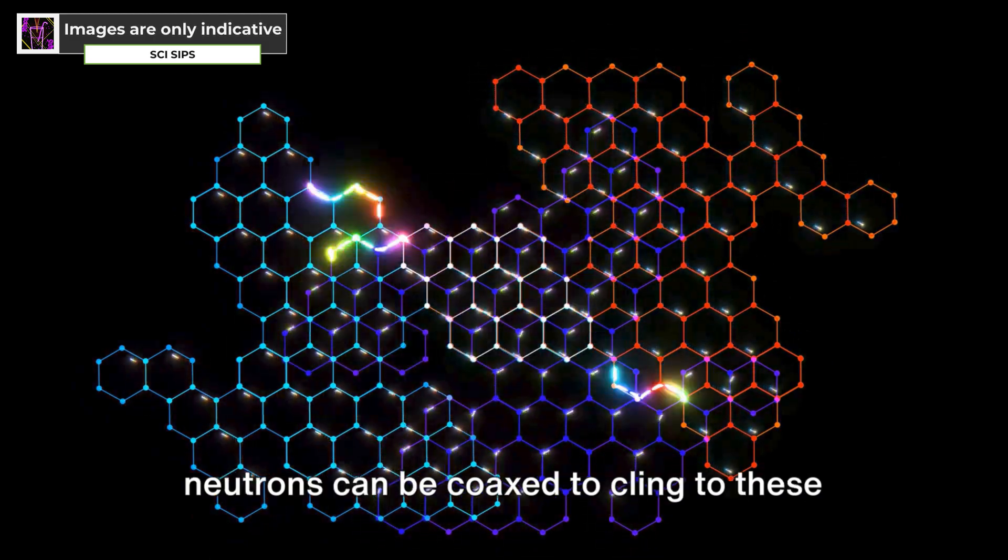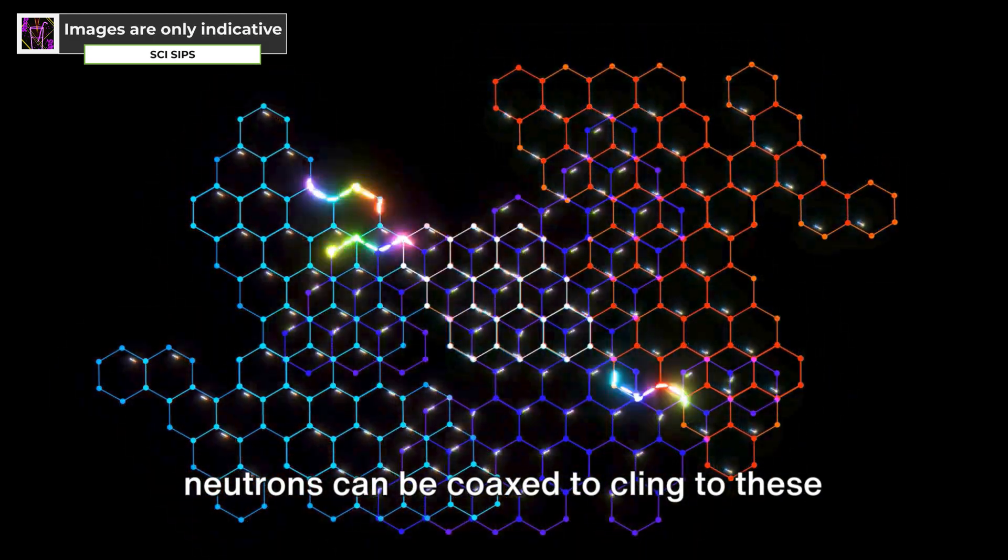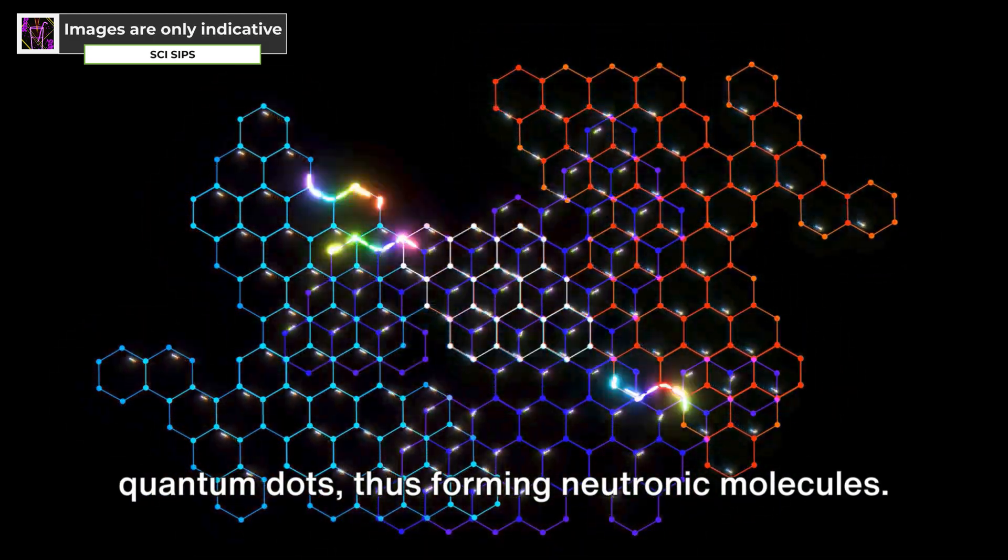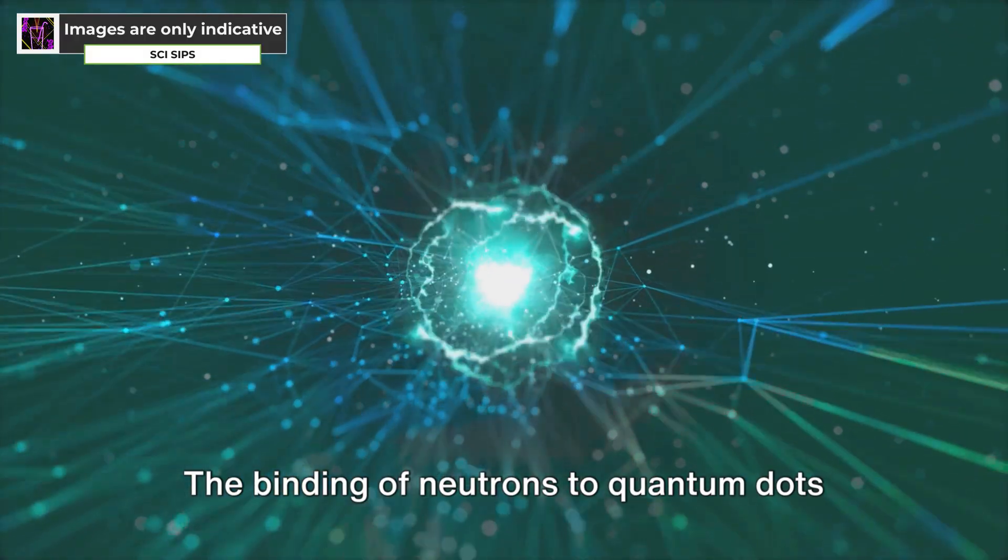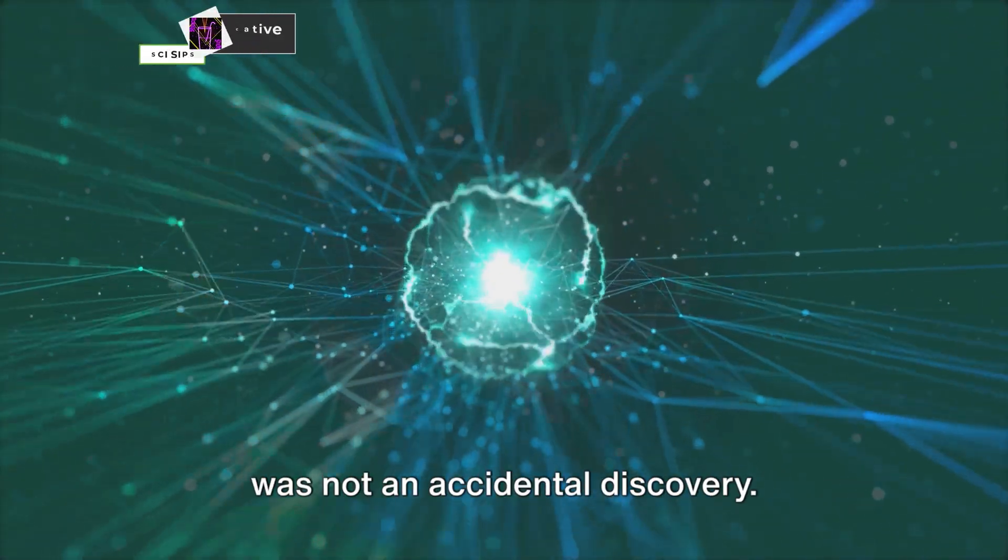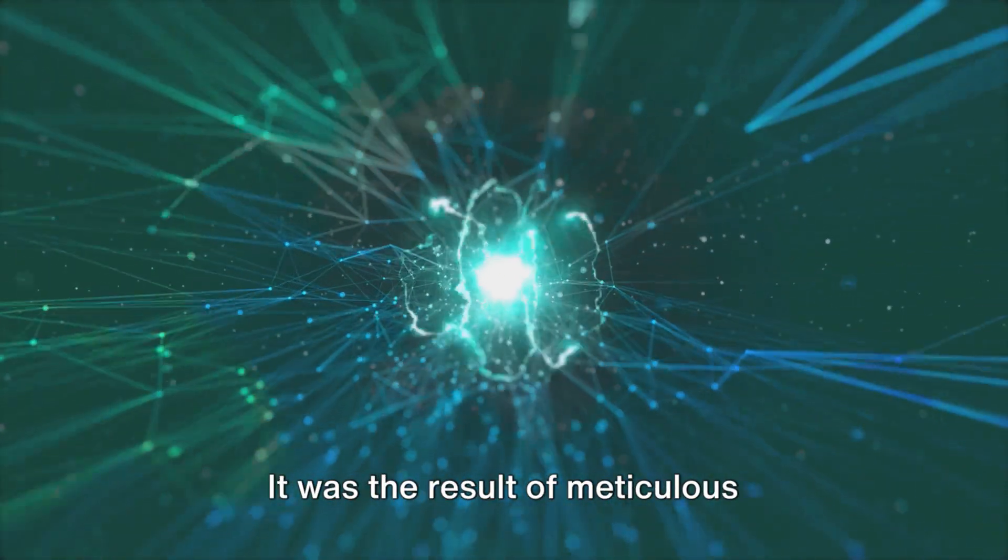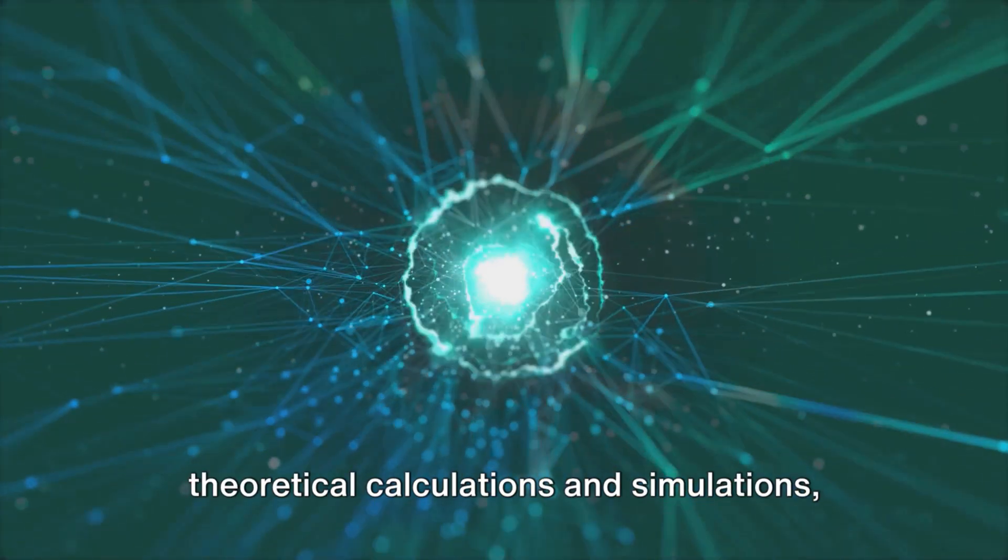Despite their lack of electric charge, neutrons can be coaxed to cling to these quantum dots, thus forming neutronic molecules. The binding of neutrons to quantum dots was not an accidental discovery. It was the result of meticulous theoretical calculations and simulations.